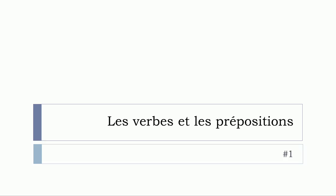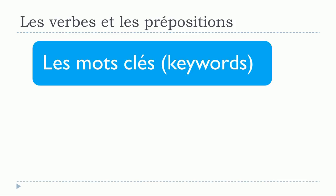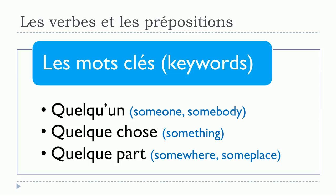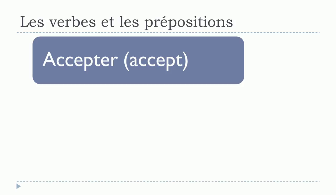Let's see. First, the les mots clés, or the keywords that we will use, because when we're talking about prepositions or constructions I will tend to use these words quite often. Quelqu'un means someone or somebody, quelque chose means something, and quelque part means somewhere or someplace.